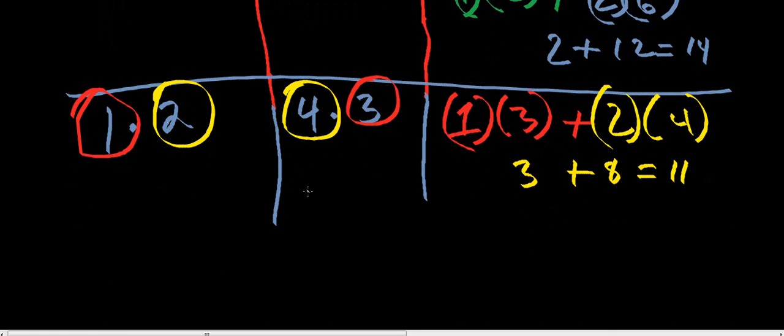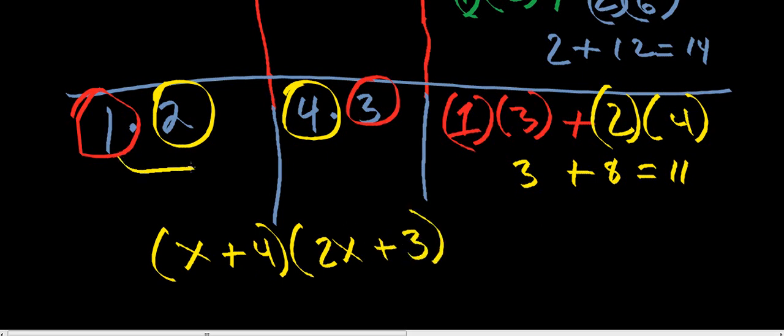So now all we have to do is write them. So we're going to write 1x plus 4 times 2x plus 3. So this number, this is going to go with this number in your parentheses, right? Because that's 1x, and that's 4x. That's not 4x, I was just kidding. That's 1x + 4, and then that's 2x + 3.